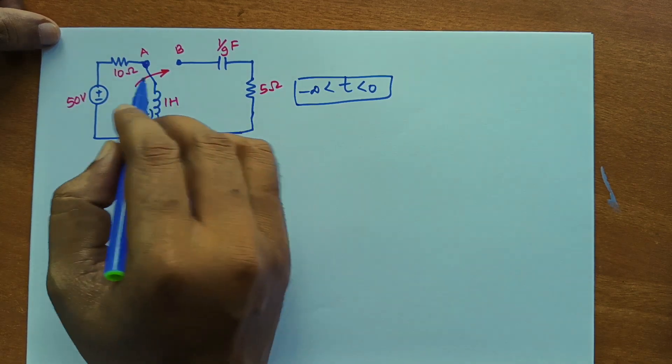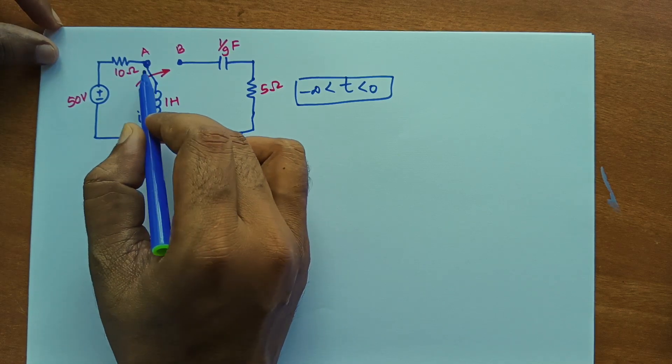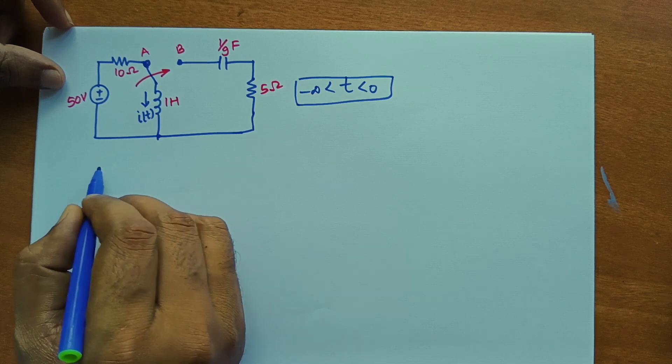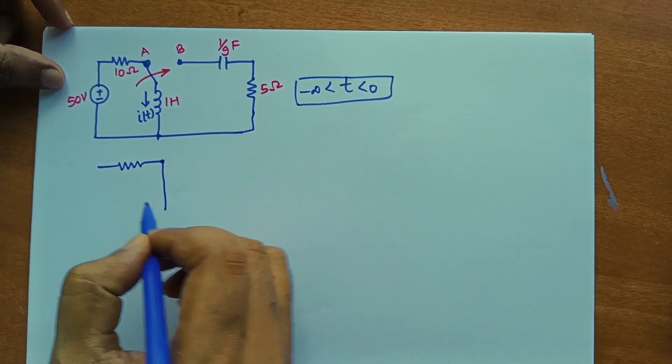So what we can do is, first of all we will keep this switch at original position and draw the circuit. So when you draw the circuit, you will get something like this.